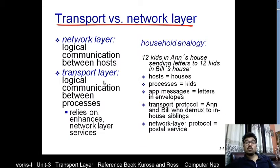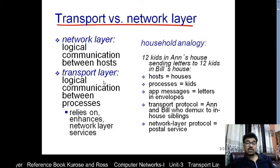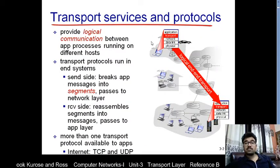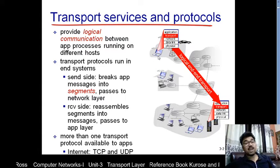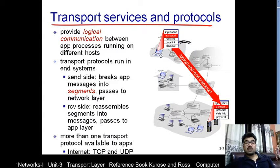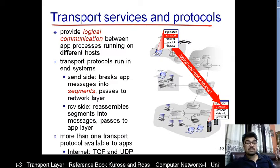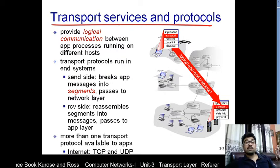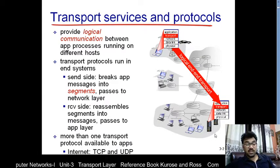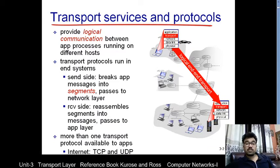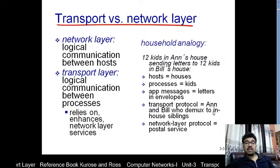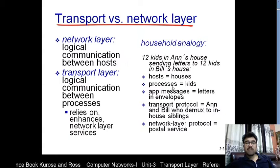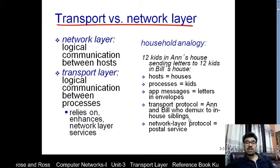In TCP/IP protocol suite, logical connection is provided by two layers: transport layer and network layer. The difference is that network layer provides logical connection between two nodes, while transport layer provides logical connection between two processes. A node is an end system which can run multiple processes inside it. So it's not just about transferring information from one system to another, but from a specific process inside one system to a specific process inside another system — that is process-to-process delivery.